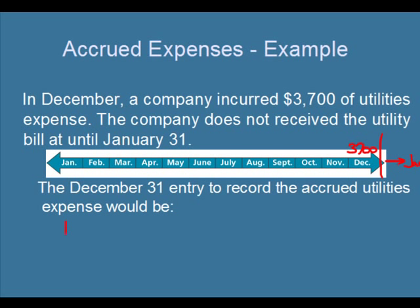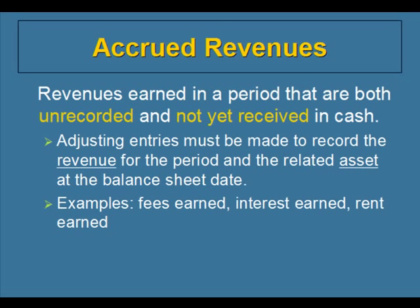The journal entry would be a debit to utilities expense for $3,700 and a credit to utilities payable or accounts payable for $3,700. An accrued revenue is a revenue that has been earned in a period but is not recorded and not yet received in cash. These revenues must be recorded before the financial statements are prepared.